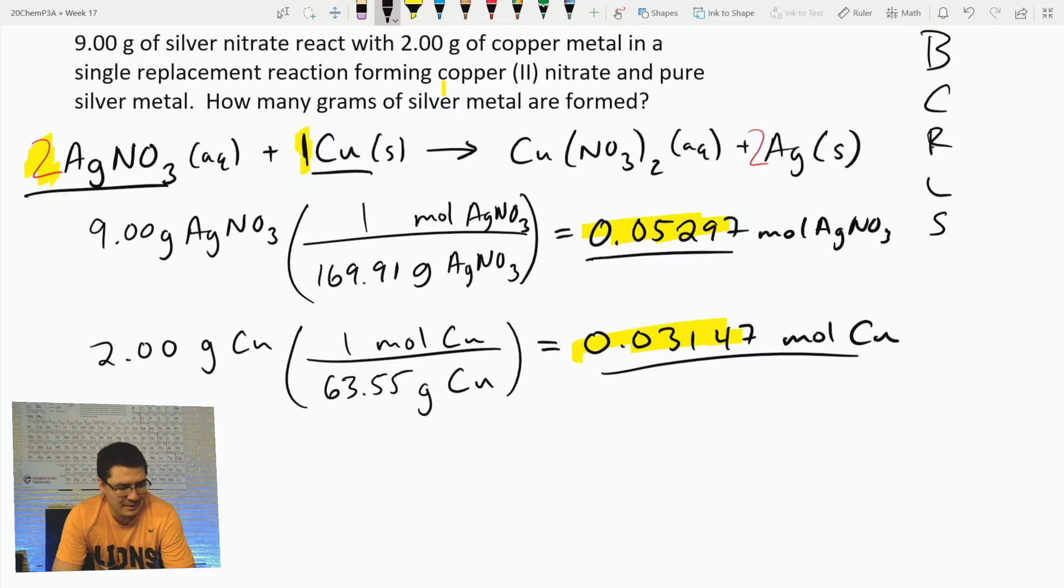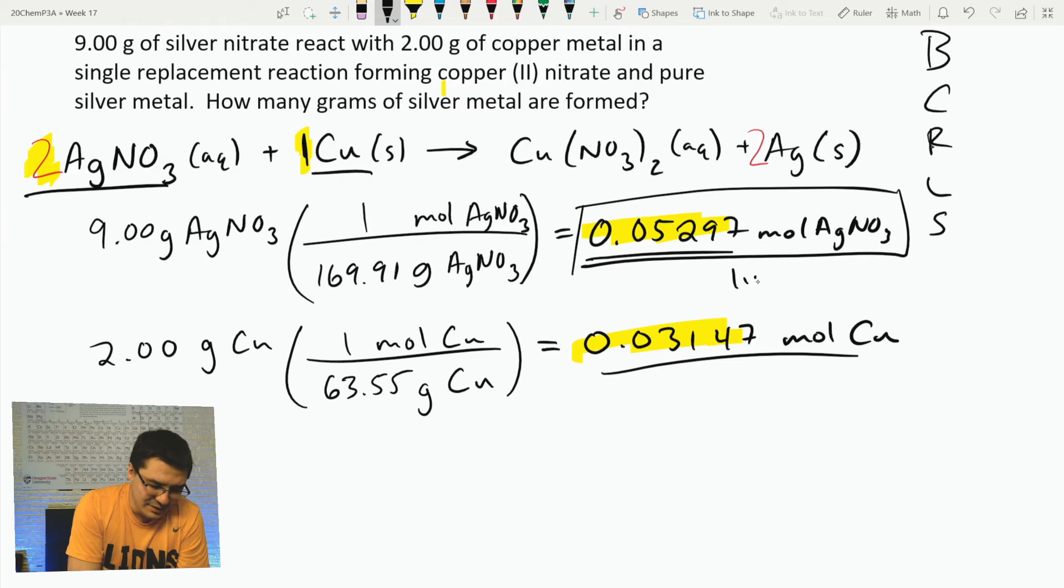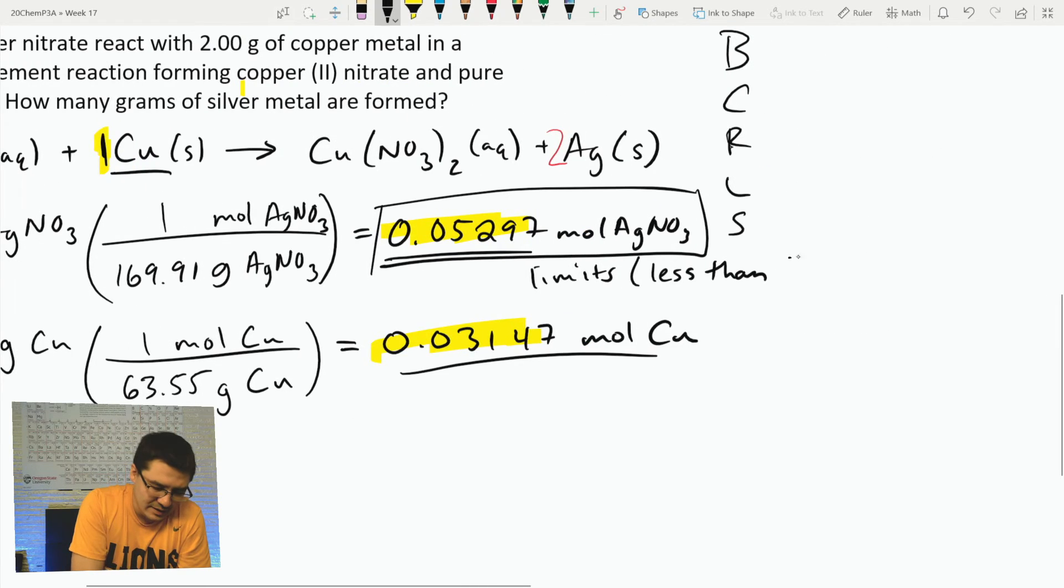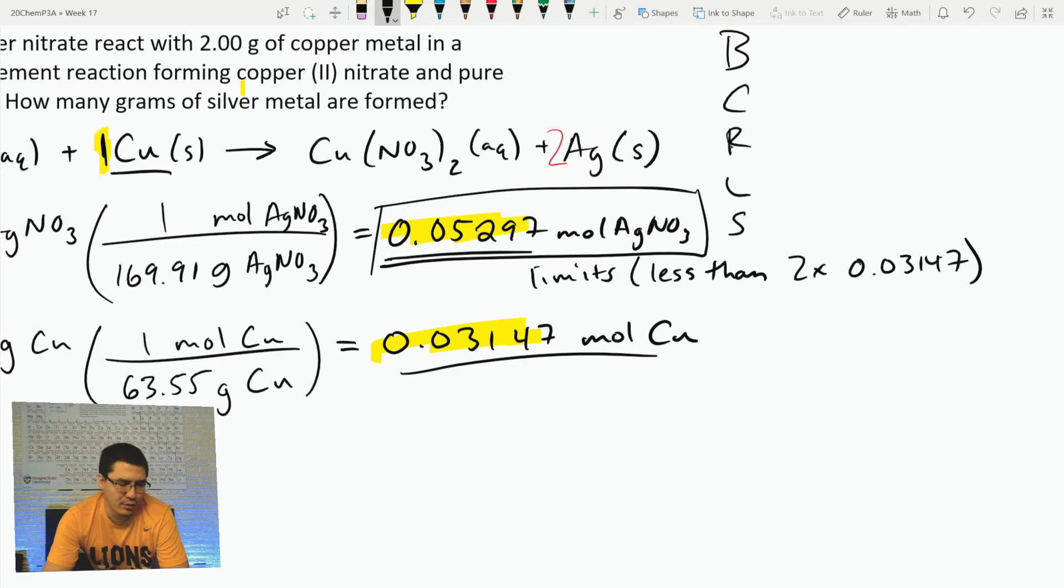I need twice as much silver nitrate as copper, but I don't have it. Based on that, I know that this limits the reaction - that's what we're going to run out of first because it's less than two times 0.03147. If it had been more than two times 0.03147, then I would have said we would have had excess of that. But in this case we have excess copper, which is probably good because silver is the expensive stuff.